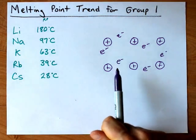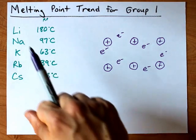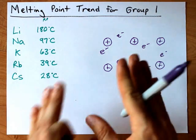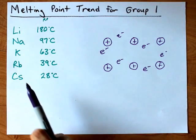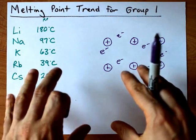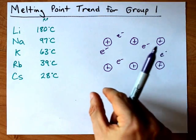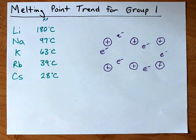Will that one electron have an easier time holding together two lithiums, which are small and more attracted to the electron because of their smallness, or cesiums, which are big, large, bulky, and have less attraction to the electron due to their size?